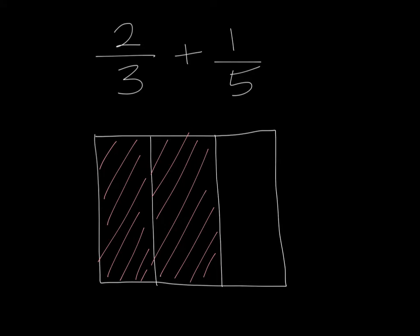The next step is to say, can we look and split this box into 5ths? And we can, and we can split it into 5ths going the other direction. 1, 2, 3, 4, 5. And we want to shade in 1 of those 5ths.